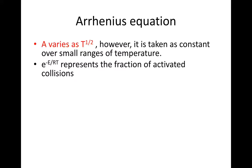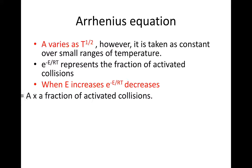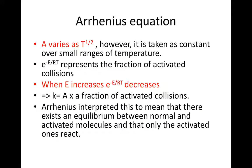E to the minus E over RT represents the fraction of activated collisions. When E increases, e to the minus E over RT decreases. That implies K is equal to A times the fraction of the activated collisions. Arrhenius interpreted this to mean that there exists an equilibrium between normal and activated molecules, and that only the activated ones react.